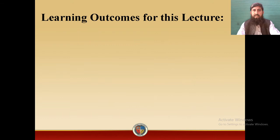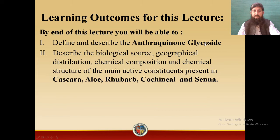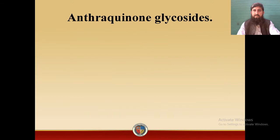The learning outcomes for this lecture. By the end of this lecture, you will be able to define and describe Anthraquinone Glycosides. You will also be able to describe the Biological Source, Geographical Distribution, Chemical Composition and Chemical Structure of the main active constituents present in Cascara, Aloe, Rhubarb, Cochineal and Senna. You will also be able to understand the therapeutic and pharmaceutical uses of these drugs.